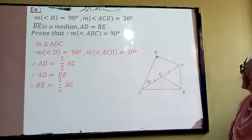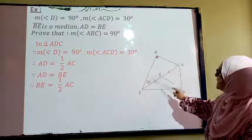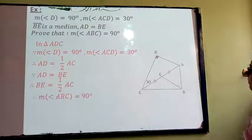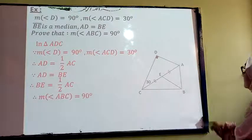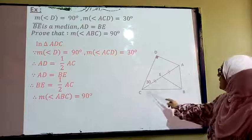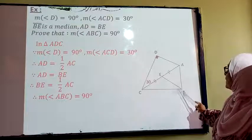And since BE equals half AC. Therefore, this triangle is the right angle triangle.